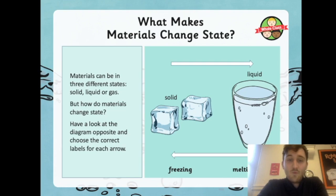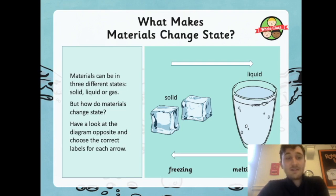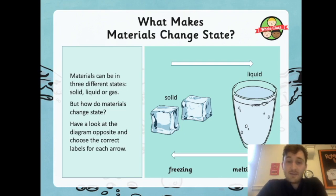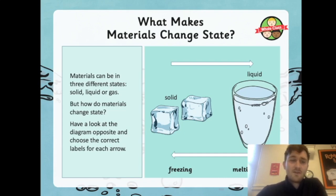So what makes materials change state? Materials can be in three different states — solids, liquids, or gases — but how do materials change states? Have a look at the diagram and choose the correct labels for each arrow.